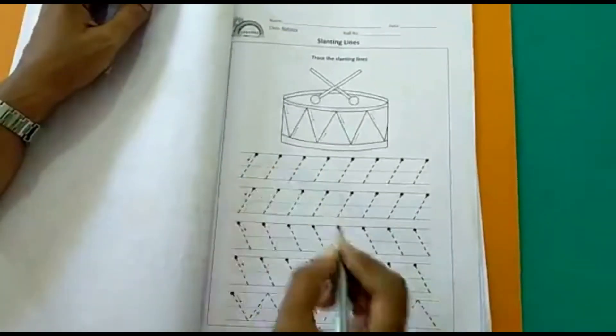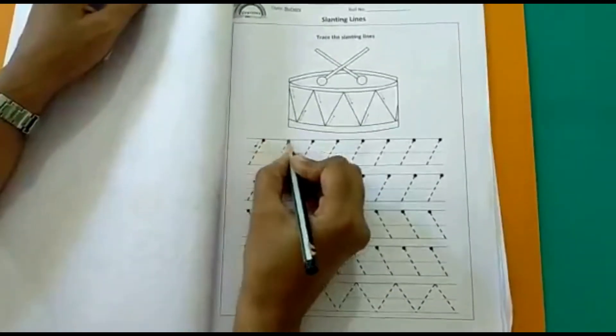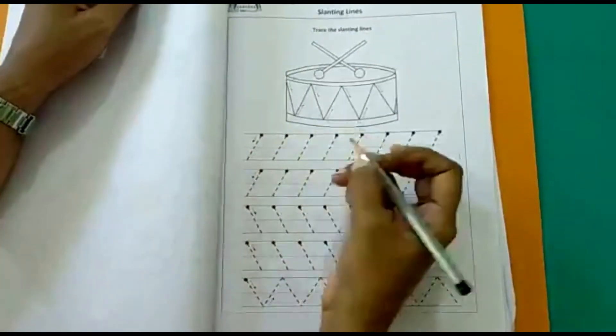So we will see how to trace the slanting lines. You see these dots over here? You have to keep your pencil at this dot and you have to join the dots.